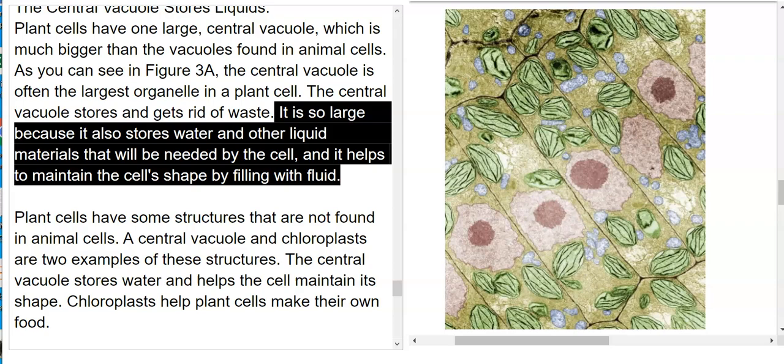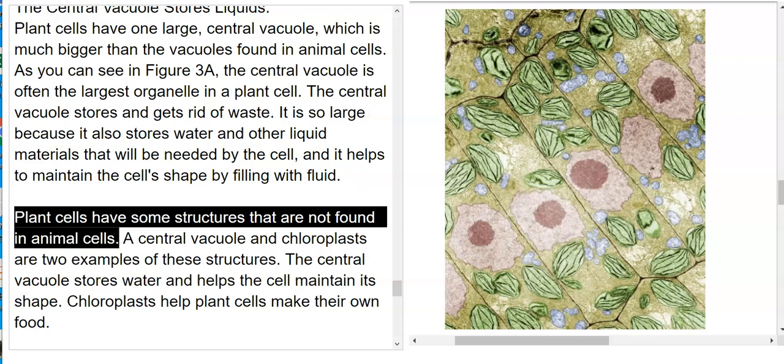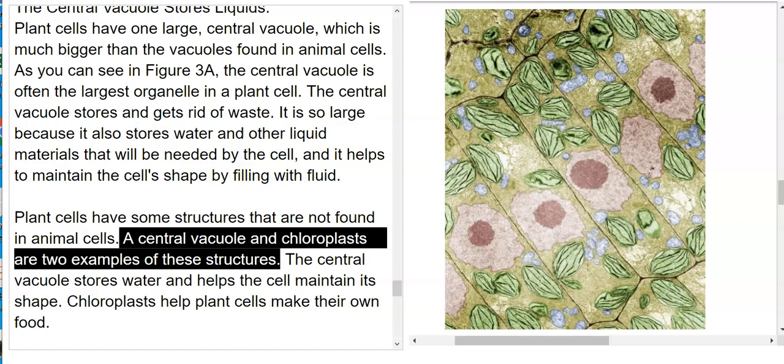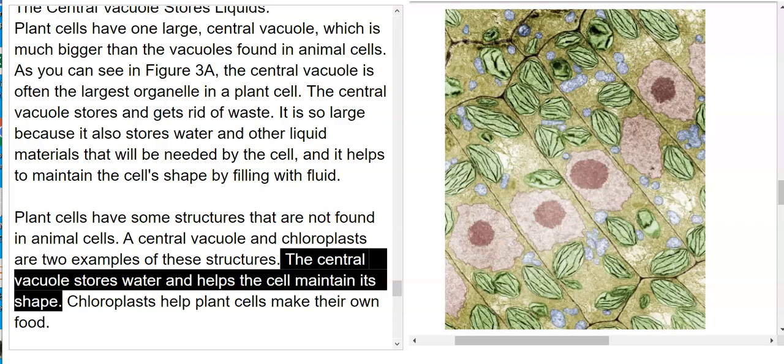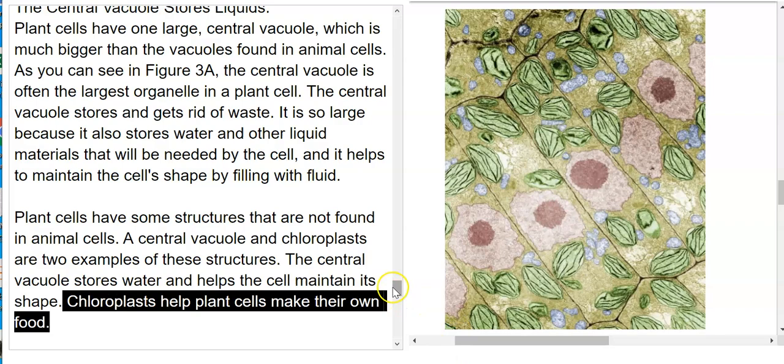The central vacuole stores and gets rid of waste. It is so large because it also stores water and other liquid materials that will be needed by the cell, and it helps maintain the cell's shape by filling with fluid. Plant cells have some structures that are not found in animal cells. A central vacuole and chloroplasts are two examples of these structures. The central vacuole stores water and helps the cell maintain its shape. Chloroplasts help plant cells make their own food.